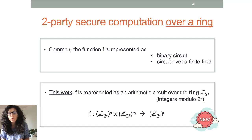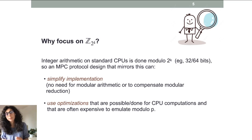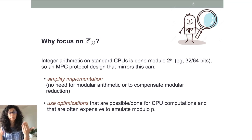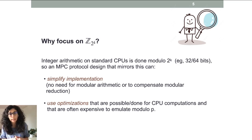Why do we do this? This choice comes from the fact that integer arithmetic on standard CPUs is done modulo 2 to the k for a specific value of k. So an MPC protocol designed in this model is simpler to implement because the arithmetic of the protocol matches the arithmetic of the machine implementing it, and one can easily use tricks and sub-protocols from CPU computation to speed things up.